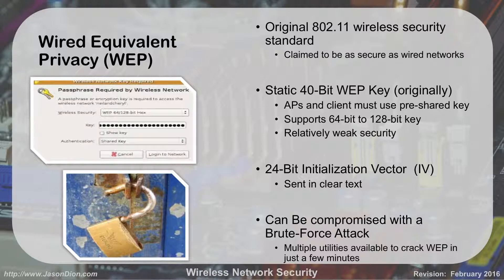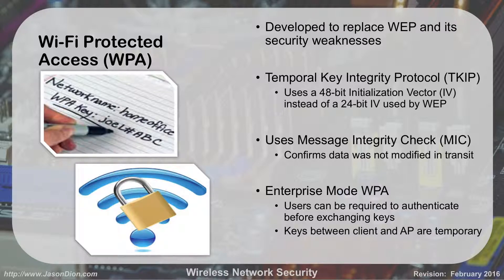WEP got replaced with WPA — Wi-Fi Protected Access — developed to fix WEP's security weaknesses. WEP had a 24-bit weak key, so they doubled it to a 48-bit initialization vector. The problem is 48 bits with today's technology is still too little — it takes about 10 to 15 minutes to crack. So you don't want to use WPA either. WPA uses a Message Integrity Check to ensure data wasn't changed in transmission, and it had Enterprise Mode where users authenticate before exchanging temporary keys. But with that 48-bit initialization vector, it's too easy to crack.